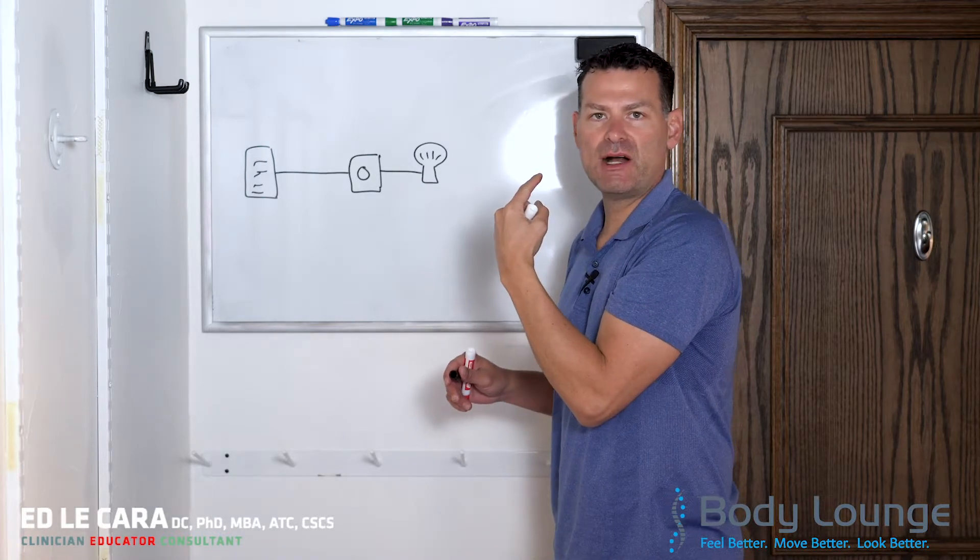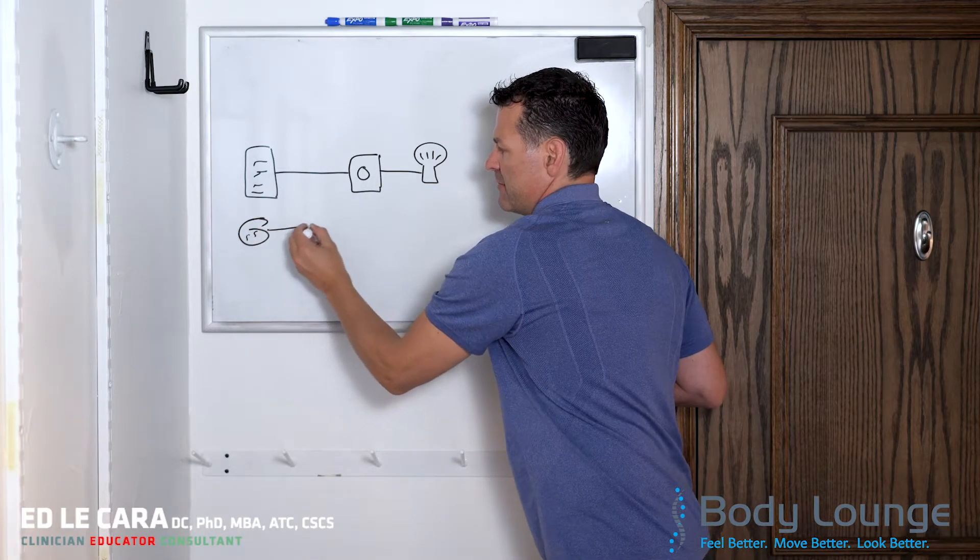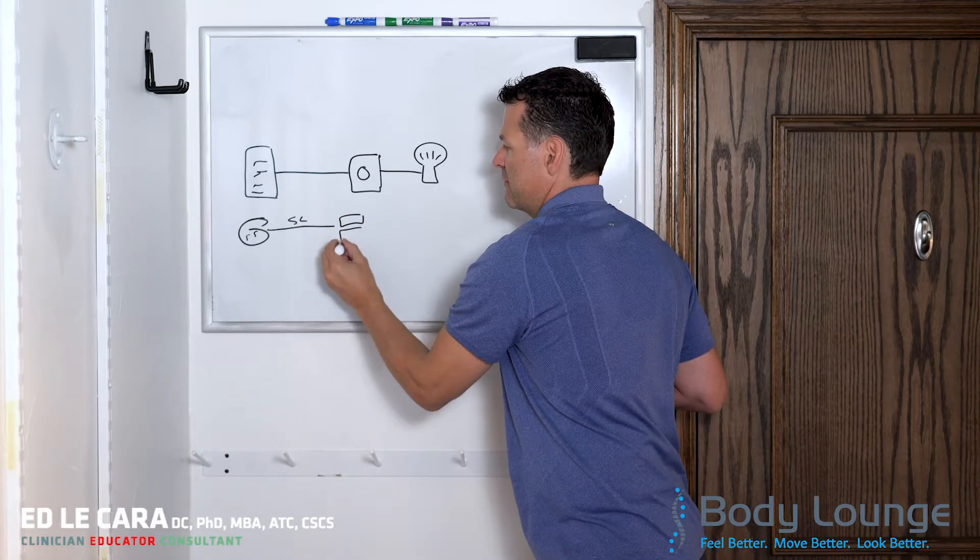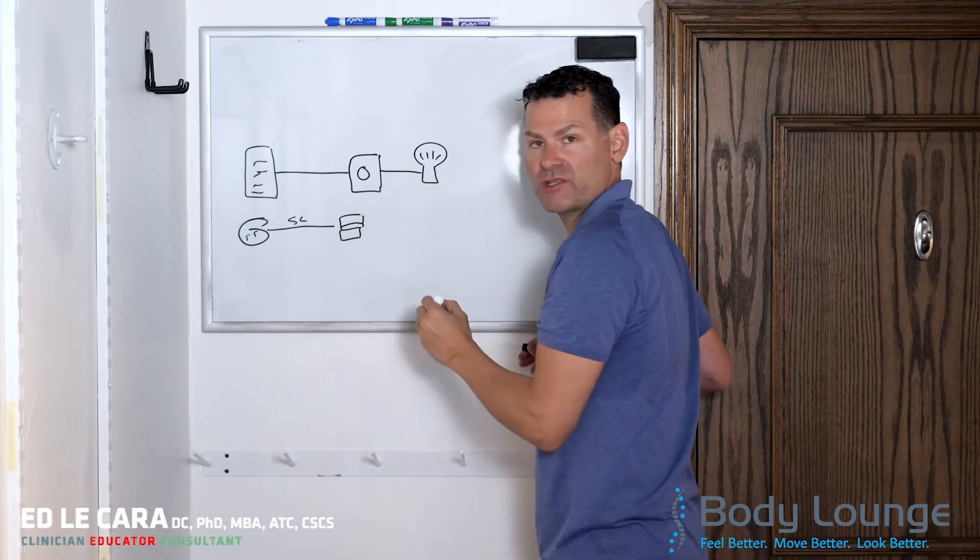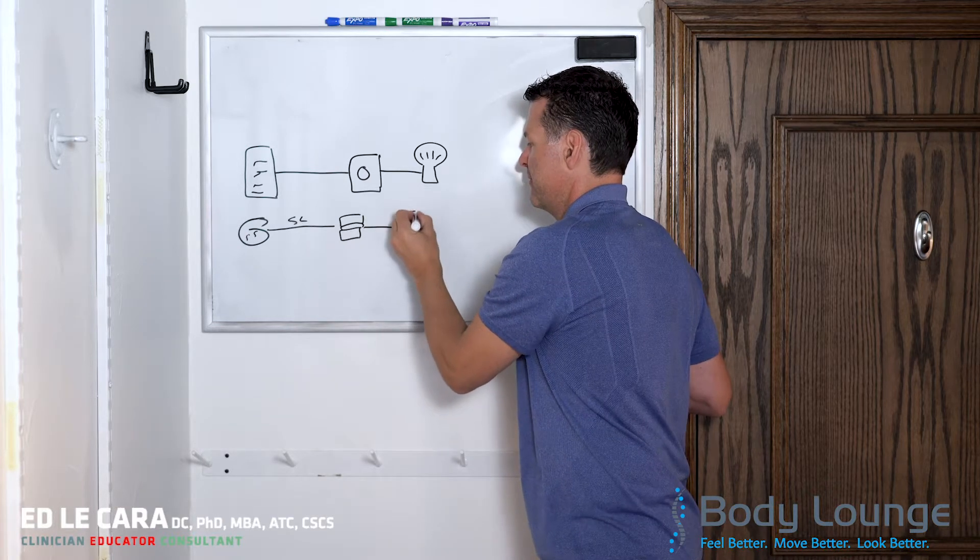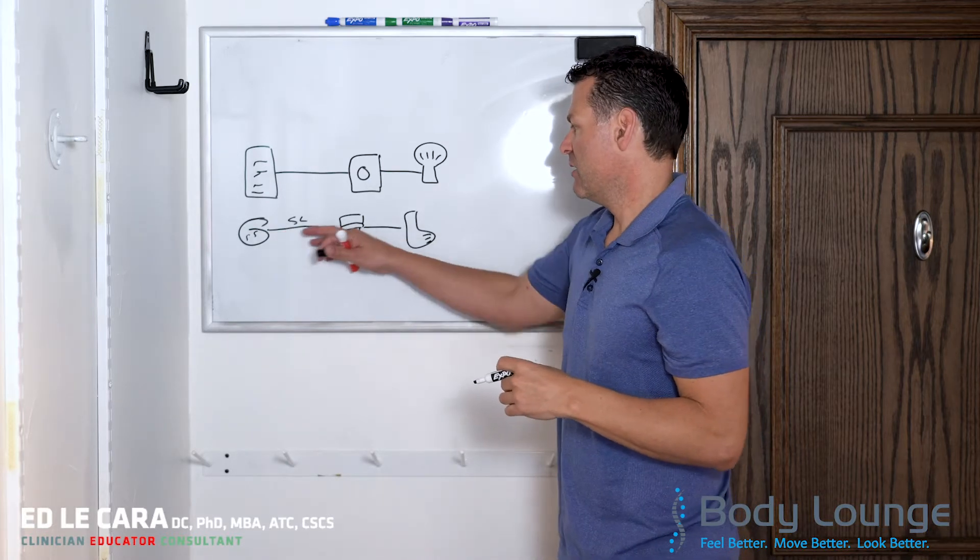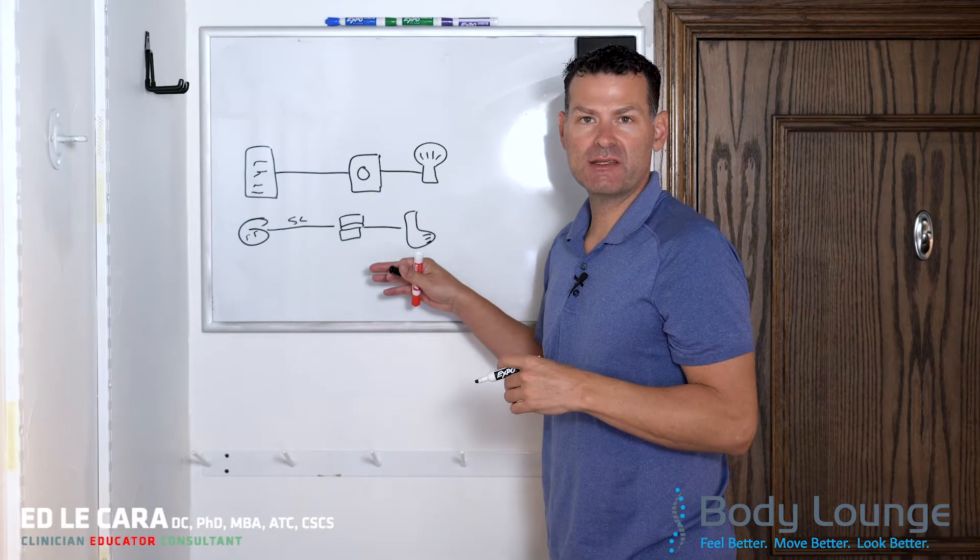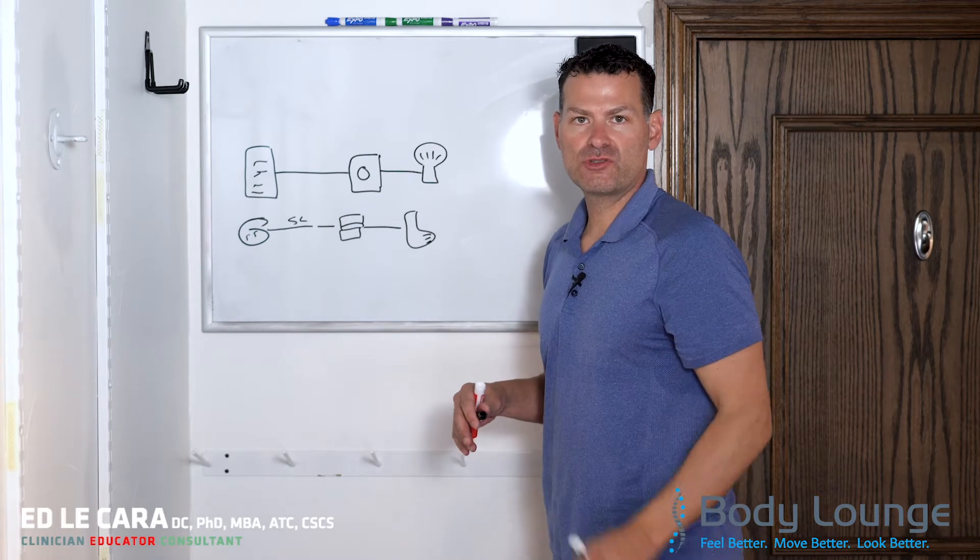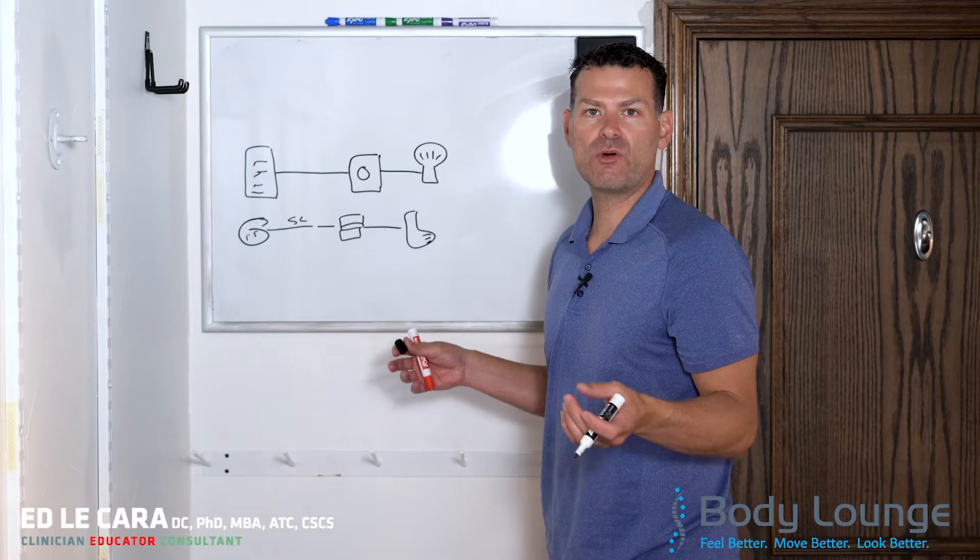The same thing happens in our body. But instead of it being the electrical box, it's our brain, spinal cord, and then it exits from the vertebrae and down into the arm or the leg or some other part of the body. If anywhere along that line gets interrupted, whether fully, like I turn the dimmer switch all the way off, that would cause total lack of conduction, like in a paraplegic or a quadriplegic scenario.